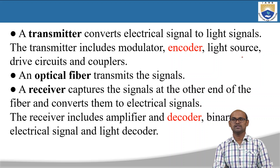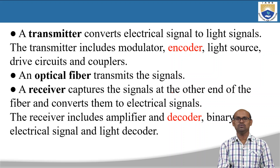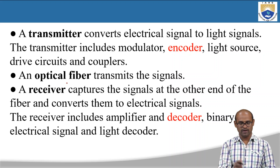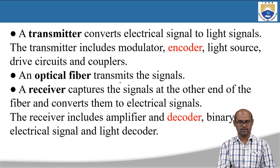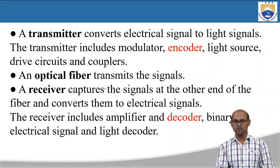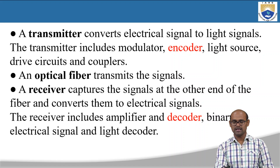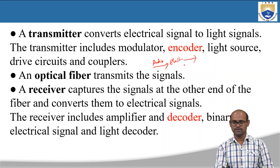Once you have converted the electrical signal into a light signal, that light signal will be given as input to the optical fiber. The light signal will be propagated through the optical fiber and received at the end of the optical fiber. The optical fiber delivers the light signal to the receiver.